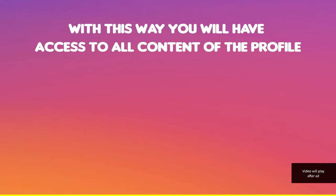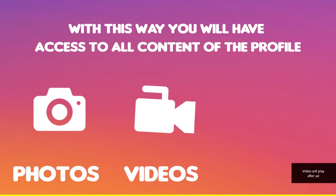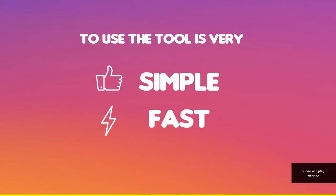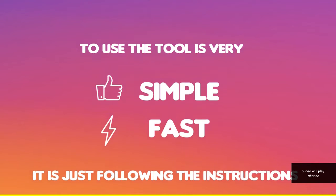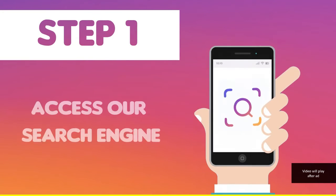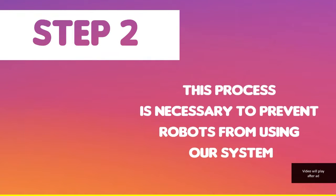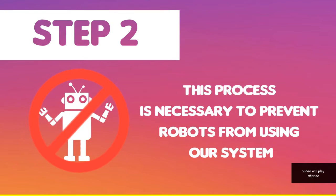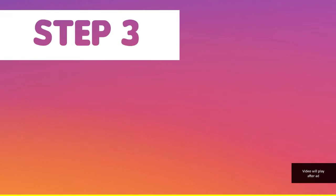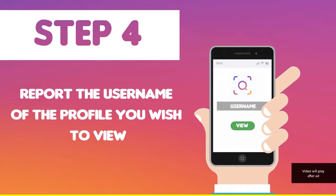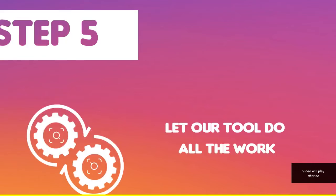With this, you will have access to all contents of the profile: photos, videos, and activities. To use these tools is very simple and fast. Just follow the instructions. Step 1: access our search engine. Step 2: report the code generated by your activator — this process is necessary to prevent robots from using our system. Step 3: our system will validate the information. Step 4: report the username of the profile you wish to view.